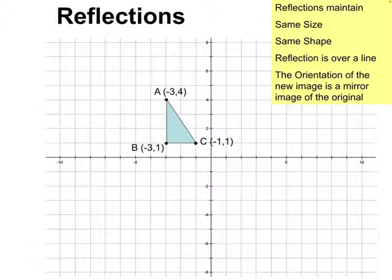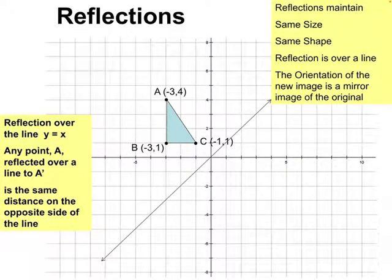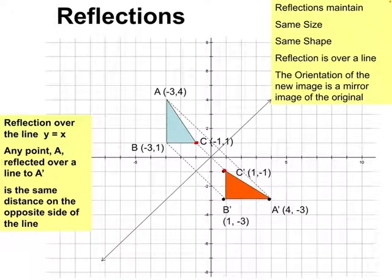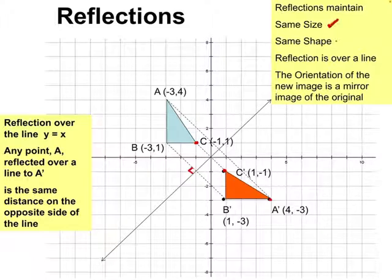We can reflect over other lines as well. Here's a reflection over the line y = x. The same principle applies — close points like point C become C prime, close to the line we're reflecting over, and far points like point A become A prime, far from the line. The dotted lines showing where each point maps to its prime are perpendicular to the line over which we're reflecting. A reflection is an isometry because it keeps the same size and same shape.